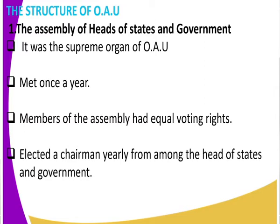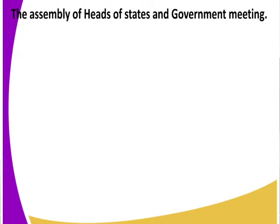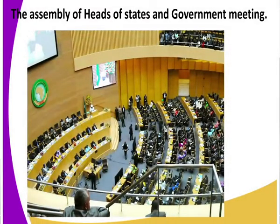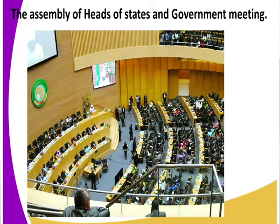After looking at the heads of state, we get to the Assembly of Heads of State and Government meeting. Those are the chambers where they always meet. As you can see at the top, where my pointer is, there is the logo of OAU and the African flag of OAU. Those people seated in there are the heads of state and government.